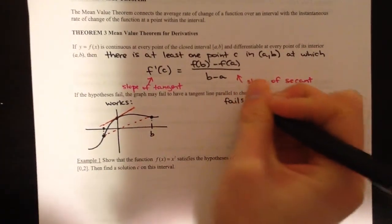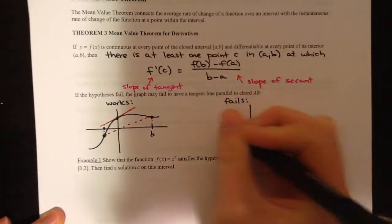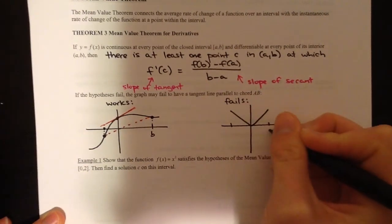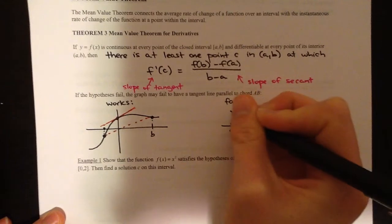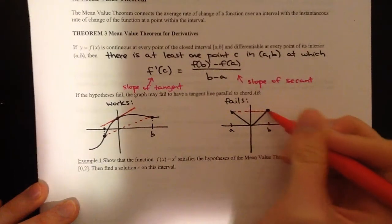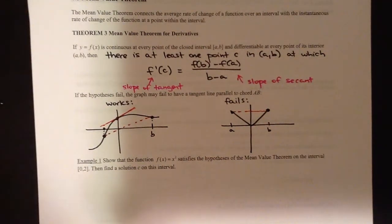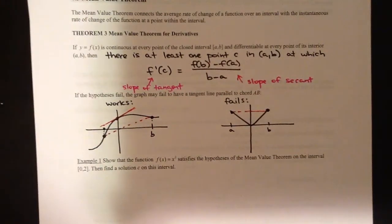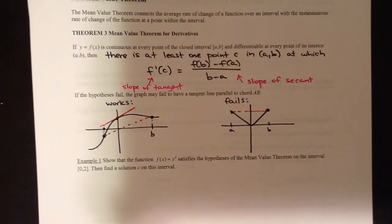Let's look at one example where the mean value theorem fails because the hypothesis failed — something like an absolute value curve. Going from A to B, the slope of the secant line between those two points is horizontal. But at no point are we ever going to have a tangent line that is parallel to that. The mean value theorem fails because this isn't a differentiable function. A discontinuous function would also fail to give us the parallel tangent line.